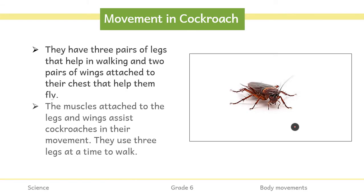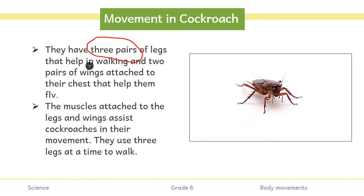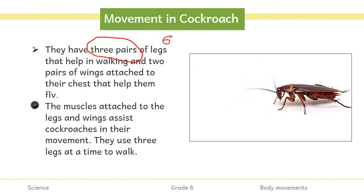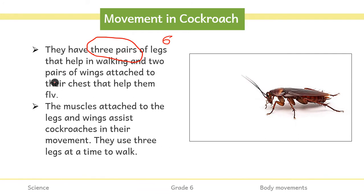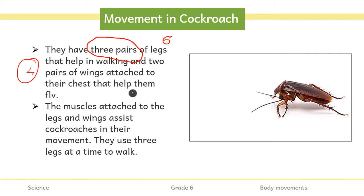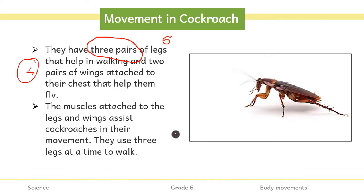In addition to the exoskeleton, the cockroach has three pairs of legs — that is six legs — and two pairs of wings, meaning four wings, attached to its chest. The muscles attached to the legs and wings contract and relax, which helps the cockroach move.